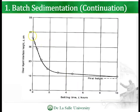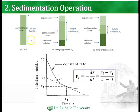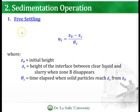This graph shows settling time versus the clear liquid interface height z. You'll notice that the height decreases as a function of time, and as time progresses the height of the interface decreases while the height of the sludge increases. To solve for the velocity, it is simply the change in height with respect to time.